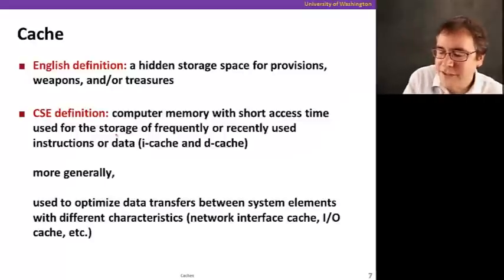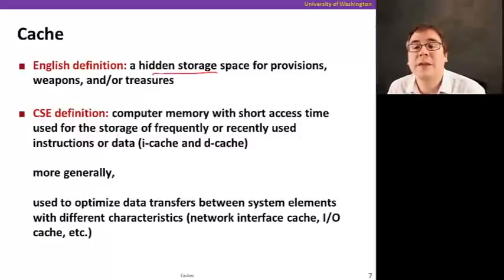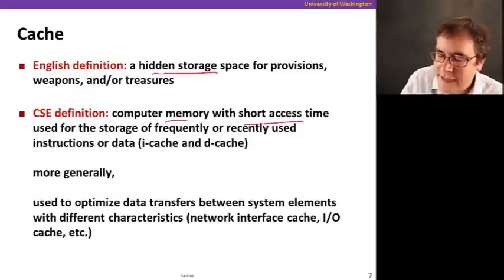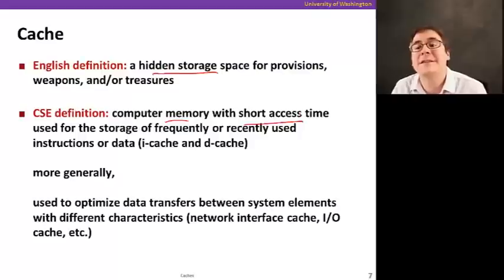So let's think about the word cache for a second. The English definition is a hidden storage space for provisions, weapons, or treasures. In our case, your treasure is data. In computer science, the definition is a computer memory with short access time used for storage of data or code that's accessed frequently or recently. More generally, it's essentially used to optimize data transfers between system elements with different characteristics. You could imagine caches - you have a cache for pages in your browser, it's a form of cache. You can cache I/O to disk because disks are also not very fast. So if you access data repeatedly, you can put data in a faster memory. These are all forms of caches.